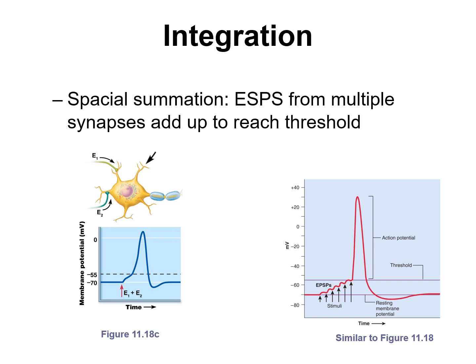Another way postsynaptic potentials can be summed is over distance — spatial summation. You could have one presynaptic neuron here and another presynaptic neuron here; they're both releasing neurotransmitters and producing excitatory postsynaptic potentials, combining to bring the cell to threshold. These EPSPs can be caused by different neurons in different locations — you could have five, six, seven, or 20 — resulting from neurotransmitter release from multiple presynaptic neurons at different locations on the cell.